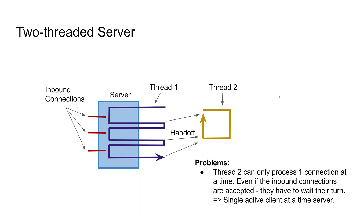The first step in solving these problems is to expand the design with one more thread. Thread one still calls server socket accept to accept inbound connections, but as soon as a connection is accepted it hands off that connection to thread two. Thread one can then go back immediately to calling server socket accept and be ready for the next client. This solves the problem of thread one being busy processing data while other clients cannot have their connections accepted.